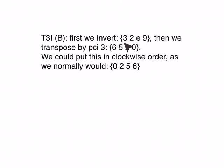So we get 3, 2, 11, and 9. Remember the original was 9, 10, 1, and 3, so you see how we get this inversion. And then we take this inversion and we transpose by pitch class interval 3. So we add 3 to each of those numbers around the clock.